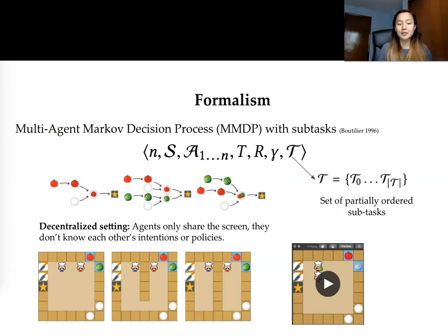Our formalism starts off with a multi-agent Markov decision process and we add in subtasks. You can interpret these subtasks as these recipes here that you can see in the middle. Now note the compositionality in our recipes. You can see here our first recipe is a simple tomato recipe where you need to chop the tomato and plate the tomato then deliver it.